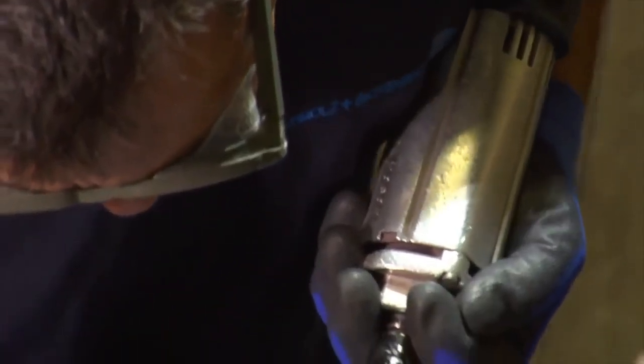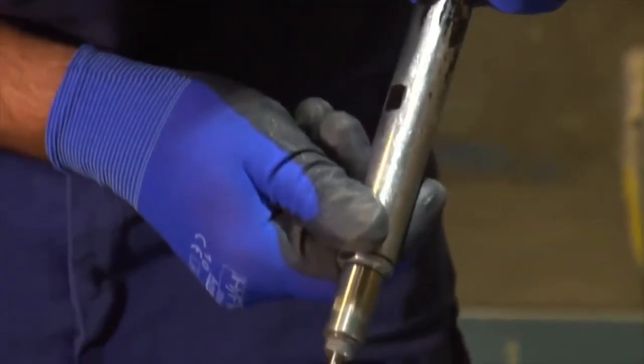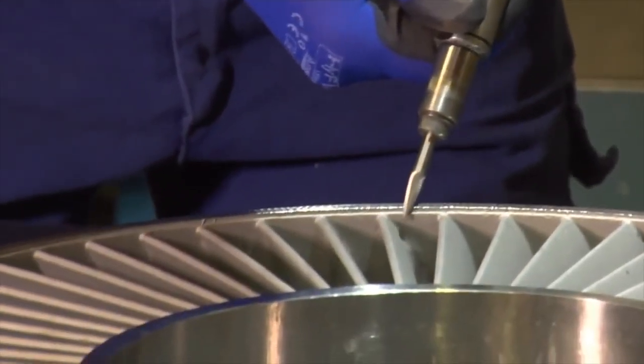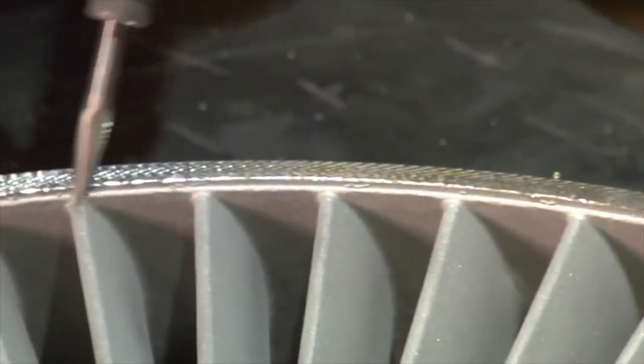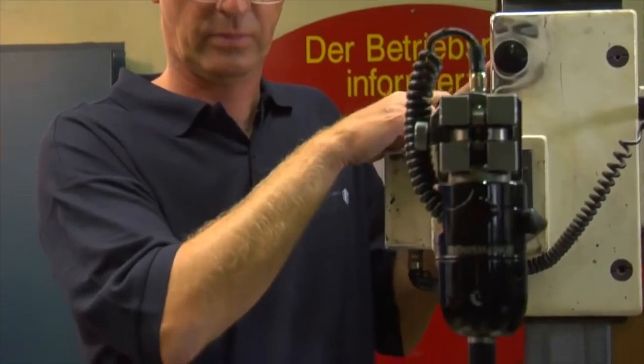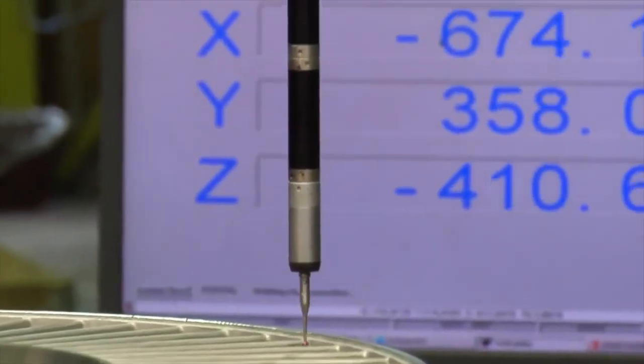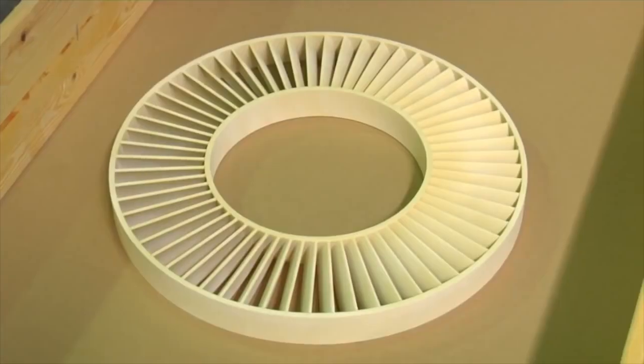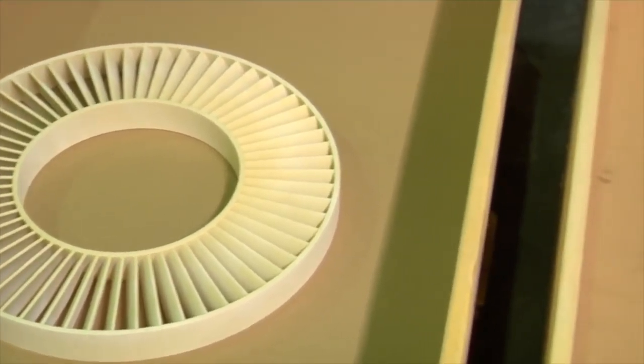Once the casting is complete, gating and feeding systems are removed. Sharp corners are deburred and unwanted surface errors are repaired. This process is followed by non-destructive tests and size inspections in accordance with customer specifications.